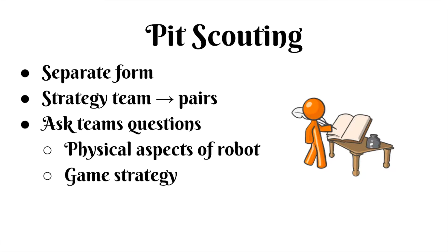The strategy team is responsible for pit scouting. Pit scouting takes place in the pit, so the team splits into pairs, wears badges, and begins speaking with the members of other teams. We ask them questions that are on the forms, such as how many wheels their robot has and what type of drivetrain it has. We also ask game strategy questions — for example, whether they would prioritize shooting goals or playing defense during the match.